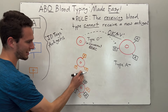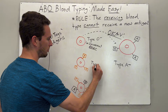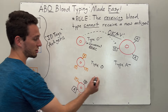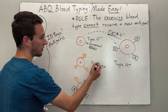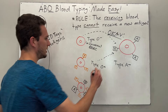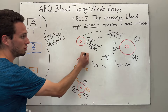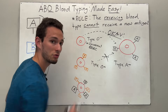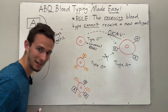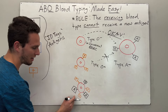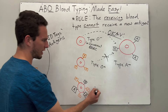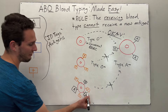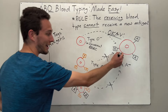Now let's look at the other two. The second cell has no A or B antigen but does have the positive antigen — so he's type O positive. He cannot donate to A negative because he has that new positive antigen that type A negative has never seen before. And finally, A positive has the A antigen but also the positive antigen, so it also cannot donate to A negative — we'd be introducing that new positive antigen.